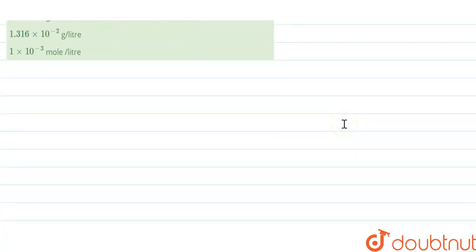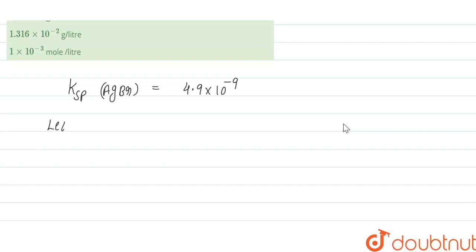Ksp represents the solubility product. We are given that the solubility product of AgBr equals 4.9×10⁻⁹. Now let the solubility of AgBr be s mole per liter.